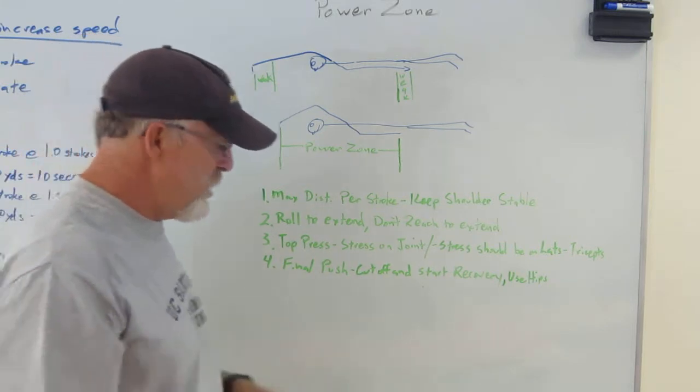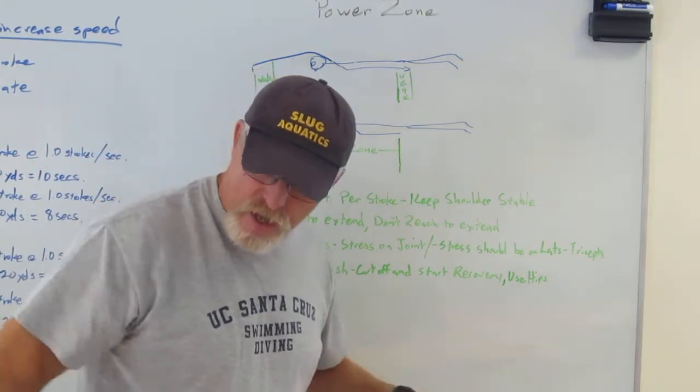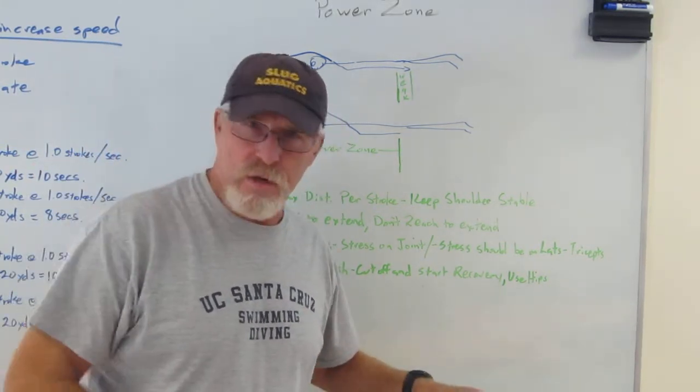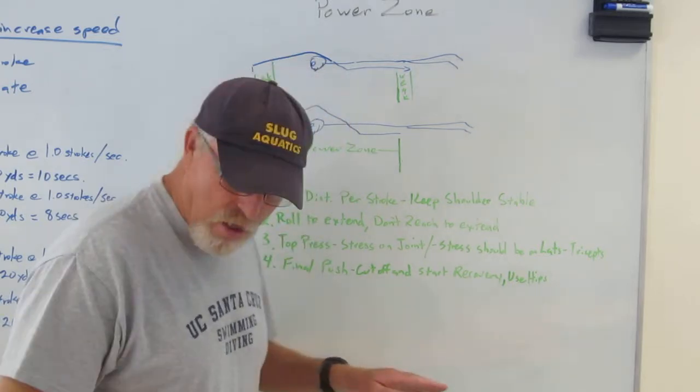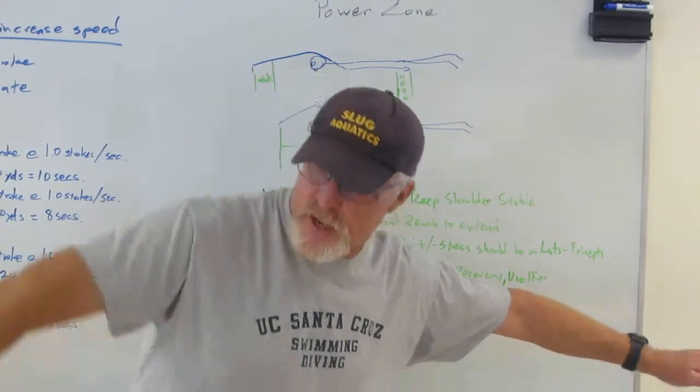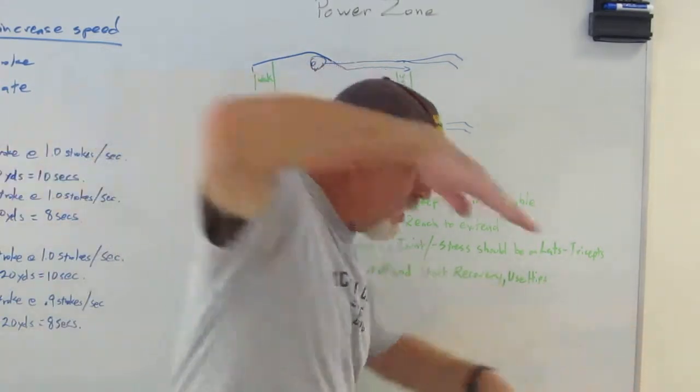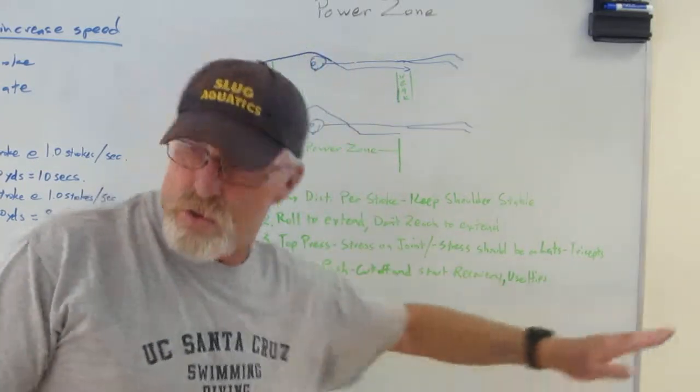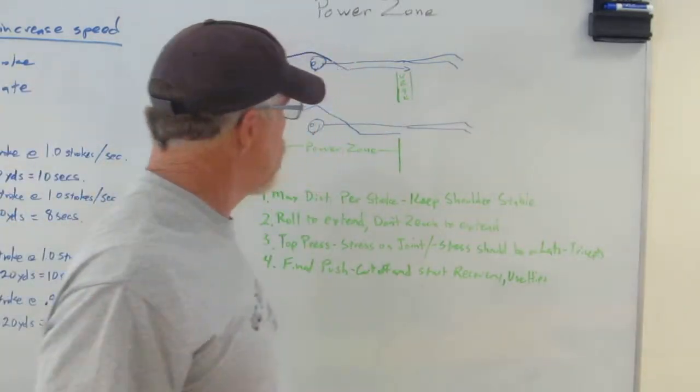And on your final push phase, as you're coming through, cut that off early because the triceps aren't going to get anything out of the back. Cut it off early and use that, snap the hand out, snap the hand out and begin your recovery and use your hips as you snap and you begin to rotate back.